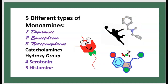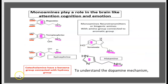The first is dopamine. The second is epinephrine. The third is norepinephrine. In addition to these catecholamines, which contain a hydroxyl group, there are also serotonin and histamine. This is dopamine, this is norepinephrine, and this is epinephrine.